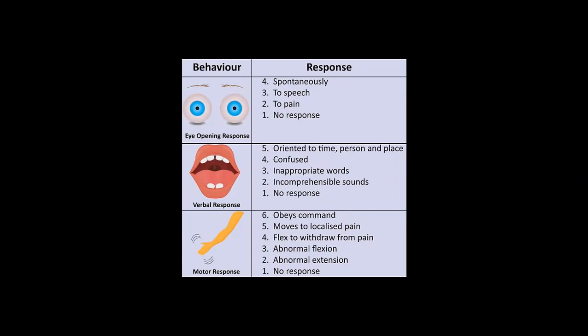GCS stands for Glasgow Coma Scale. We use this scale to assess the patient's level of consciousness — to find out how conscious the patient is. According to the patient's level of consciousness, we check the patient's responses.